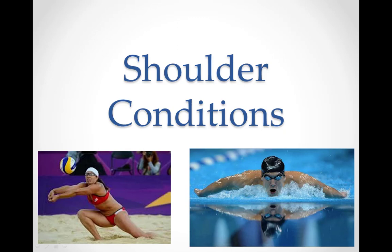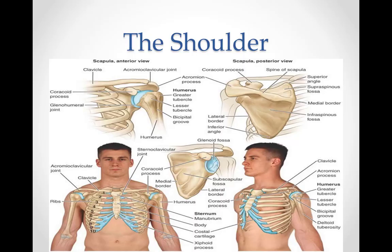Shoulder conditions. The human shoulder is made up of three bones: the clavicle, or collarbone, the scapula, or the shoulder blade, and the humerus, or the upper arm bone, as well as associated muscles, ligaments, and tendons.